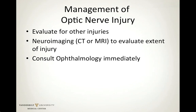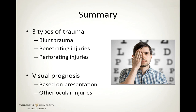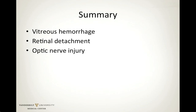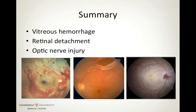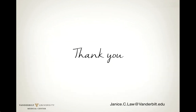In summary, there are three types of trauma, and visual prognosis is based on the patient's presentation and whether other ocular injuries are present. All three common clinical manifestations of posterior segment trauma — vitreous hemorrhage, retinal detachment, and optic nerve injury — can be caused by any of the three trauma types and range in severity from mild vision changes to severe vision loss. Surgical repair is available for vitreous hemorrhage and retinal detachment. Optic nerve injuries often lack treatment to improve vision unless orbital fracture bone impingement can be surgically decompressed. All three entities need immediate attention by an ophthalmologist, especially when there is sudden vision loss. Thank you for your attention.